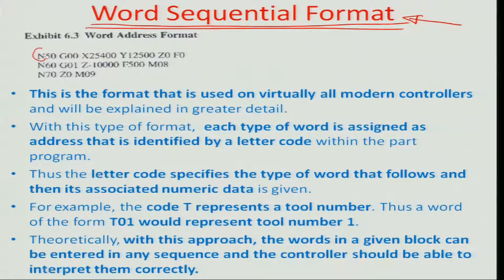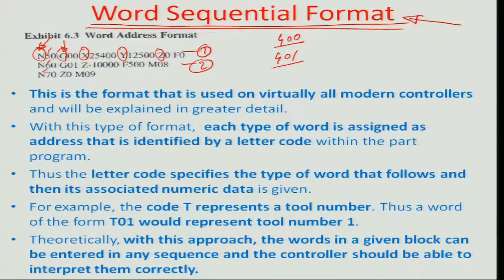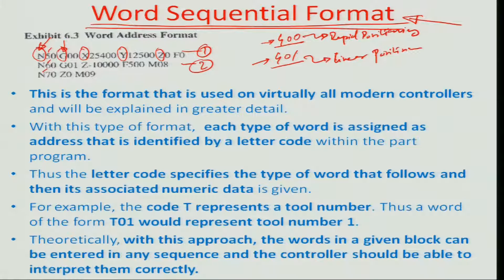In the word sequential format, a word is associated with a certain syntax number. For example, the word 'n' indicates the index number: n50 means the 50th line of the program, n60 the 60th line, and so on. There are also G commands — preparatory commands — such as g00 and g01 in blocks 1 and 2. G00 corresponds to rapid positioning and G01 corresponds to linear positioning. These preparatory commands preset the controller to carry out a certain operation in a certain manner.